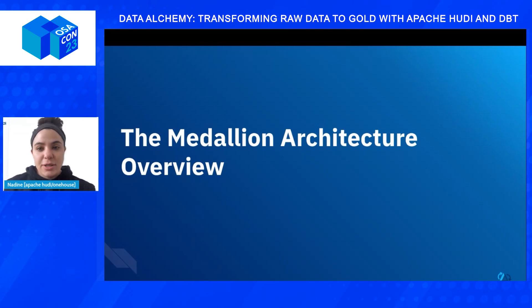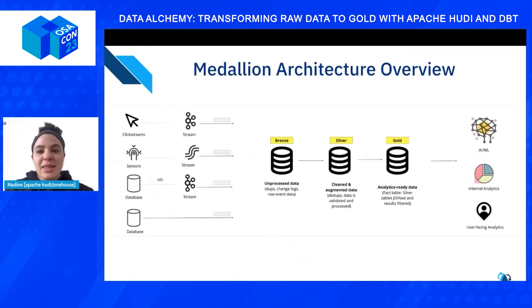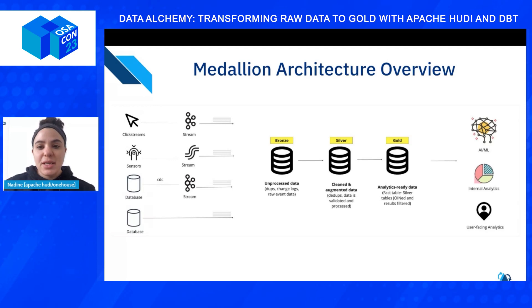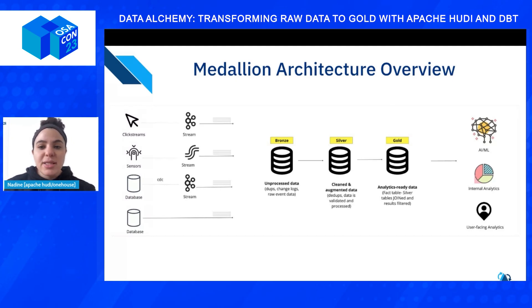Let's go over the medallion architecture. Let me know in the comment section if you've heard about the medallion architecture or Apache Hudi. This is a typical view of what most of us have seen surrounding the medallion architecture. When data is ingested, it will be unprocessed and stored in a data lake. In the raw or bronze layer, you'll have data duplication, chain logs, raw event data, and more. Data in the bronze or raw layer is typically unstructured.